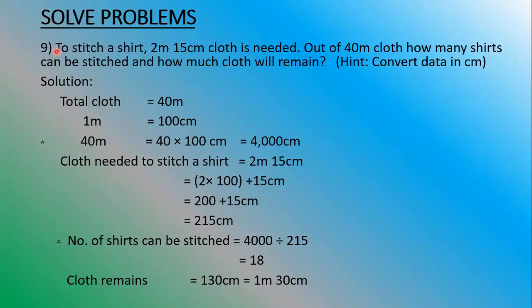At the beginning of the lesson, I told you the conversions: 1m is equal to 100cm, 1kg is equal to 1000g, 1 litre is equal to 1000ml — and that conversion is already done, so it will be easy for us. Now, the total cloth given is 40m, and since it is given in meters, we will convert it into cm.